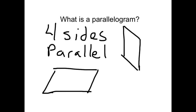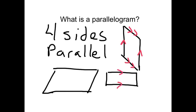This one is also a parallelogram — this side goes in the same direction as this one, and this side goes in the same direction as that one. A rectangle is also a parallelogram because these two sides are going in the same direction and these two sides — the opposite sides — are going in the same direction. A square is a parallelogram too. All of these have four sides with opposite sides going in the same direction.